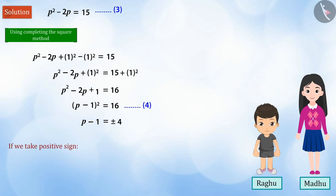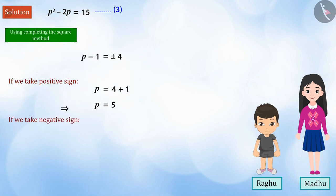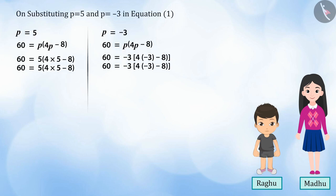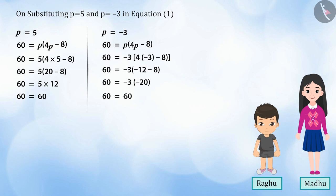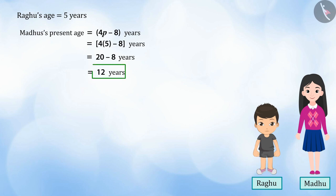Thus, if we take the positive sign, the value of p will be 5, and if we take the negative sign, the value of p will be minus 3. Therefore, both the solutions of p, that is 5 and minus 3, satisfy our equation. But if we wish to find out the age of Raghu and Madhu, an age cannot be a negative integer. Therefore, we will take the value of p as 5. Thus, Raghu's age will be 5 and Madhu's age will be 12 years.